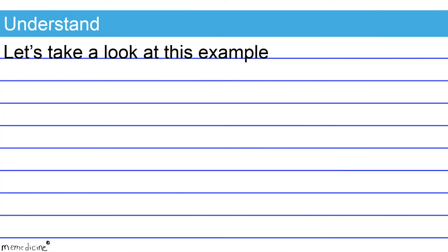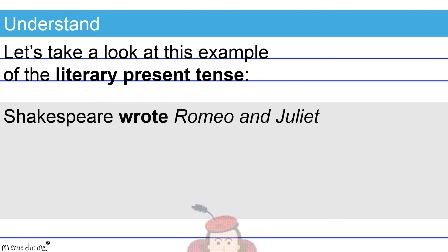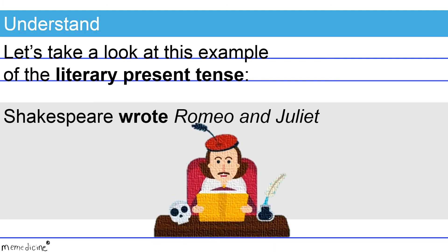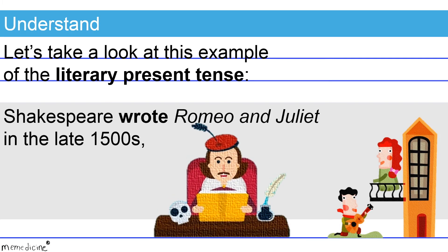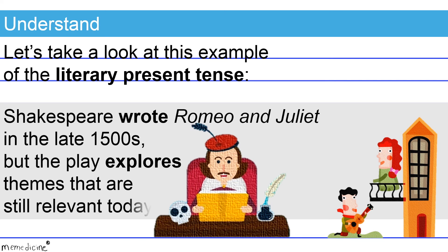Let's take a look at this example of the literary present tense: Shakespeare wrote Romeo and Juliet in the late 1500s, but the play explores themes that are still relevant today. The sentence shifts to the present tense to discuss the nature and contents of the artistic work Romeo and Juliet, and this tense shift is appropriate.